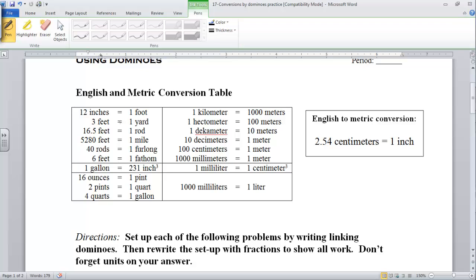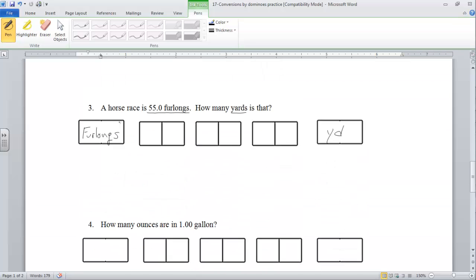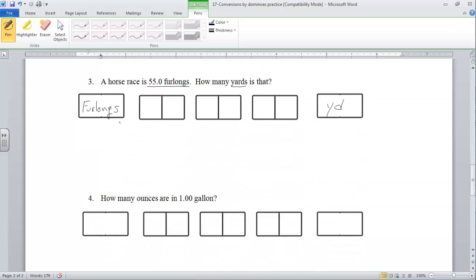We're going to use that table. We know from that chart now that we're going to go from furlongs to the idea of rods. So furlongs are going to pair up our domino, then we have rods on the other side of the domino. Then we have rods that has to match up, and rods go with feet from our conversion, and feet go with yards from up top in the conversion table.